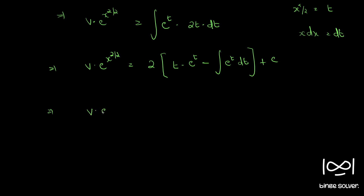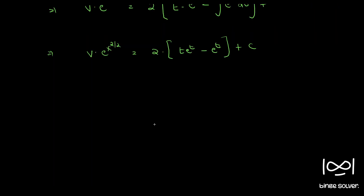So v into e raised to x square by 2 equal to 2t e raised to t minus e raised to t plus c. Taking e raised to t outside, and putting t as x square by 2, we have v into e raised to x square by 2 equal to e raised to x square by 2 into x square by 2 minus 1 plus c.